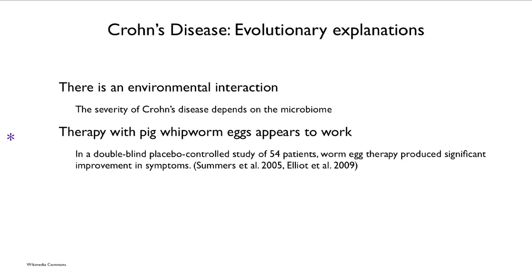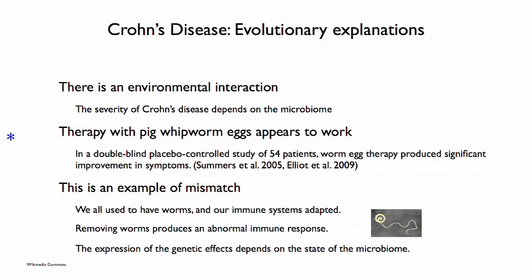It is possible to give cocktails of pig whipworm eggs to patients who have Crohn's disease. In a double-blind, placebo-controlled study of 54 patients, worm egg therapy produced significant improvement in symptoms. This is an excellent example of mismatch — we all used to have worms. The picture of Trichuris suis, the kind of worm used in the therapy, illustrates this. The absence of worms produces an abnormal immune response, and the expression of the genetic effect depends on the state of the microbiome.